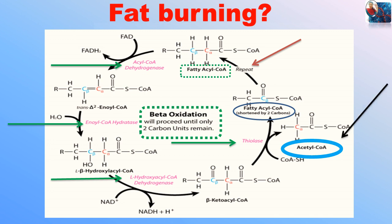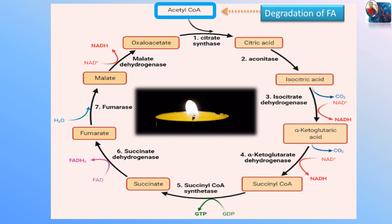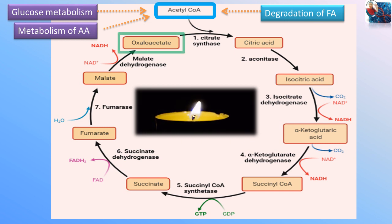Now what happens to this acetyl coenzyme A? Acetyl coenzyme A goes into the Krebs cycle to get oxidized. Although here we are discussing the acetyl coenzyme A coming from degradation of fatty acids, there are other sources of acetyl coenzyme A as well, such as catabolism of glucose and amino acids. Remember that acetyl coenzyme A is a two-carbon molecule. This acetyl coenzyme A condenses with oxaloacetate to form citrate, which undergoes further reactions to produce two molecules of carbon dioxide, as we can see in the third and fourth steps.